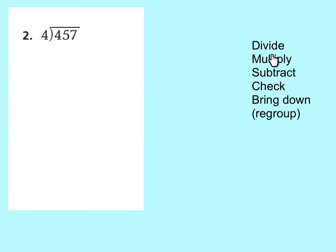Over here I have some words that are very important and will help us remember our steps in division. The first is divide, the second is multiply, the third is subtract, the fourth is check, and the fifth is bring down. A way to remember that is: Does McDonald's Sell Cheeseburgers?